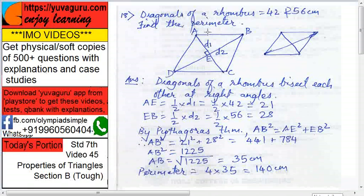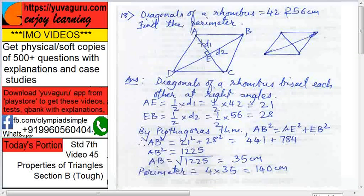By Pythagorean theorem, what we get: hypotenuse square equals side 1 square plus side 2 square. So AB square equals AE square plus EB square. So AE square, we know, is 21 square, and this is 28 square.